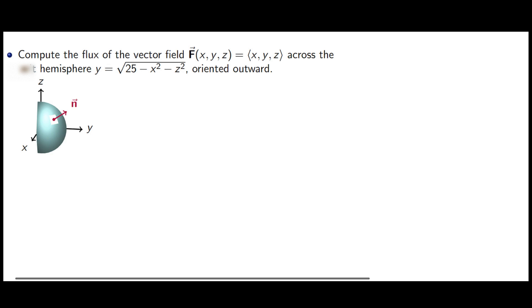In this problem, we are supposed to compute the flux of the vector field f of x, y, and z in the hemisphere y equals square root of 25 minus x squared minus z squared, oriented outward as shown in the picture.